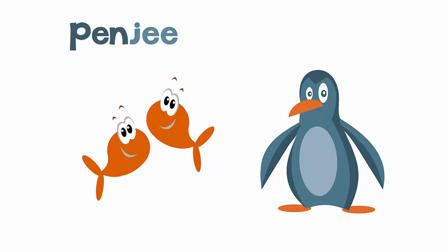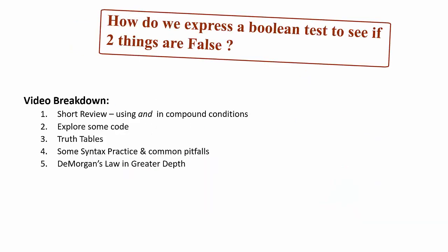Welcome to this video on a few interconnected things, all having to do with answering this question: how do we express a Boolean test to see if two things are false? Here is the video table of contents. First, we're going to review using AND in compound conditions, because this is going to be a compound condition — two things being false means it's going to be compound, with two things. I want to first make sure we remember how compound conditions work using AND.